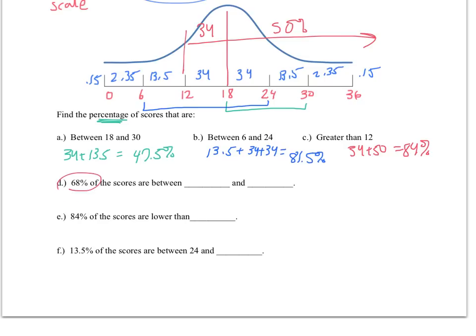This next section is checking to see if you understand how these percentages work. So 68% of the scores, that's going to be one standard deviation below and one standard deviation above, which would be 12 to 24. 84% of the scores are lower than what number? Now if we look at our chart, the middle value represents 50%, and I need 84% of the scores. Right here gives me another 34. So this number of 24 tells me that 84% of the people scored at a 24 or below. And then the last section, 13.5% of the scores are between 24 and what number? Well, I know that there is a 13.5 here. Therefore, we're looking for between 24 and 30.